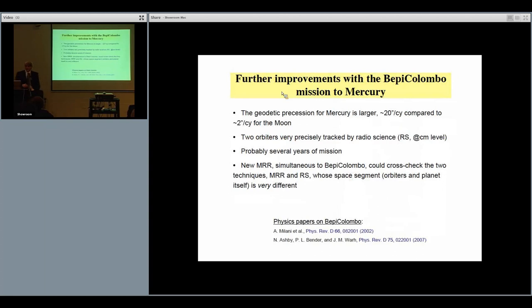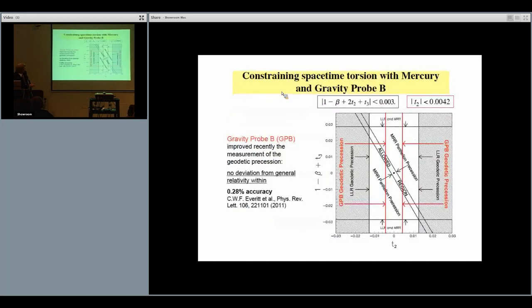Further improvements can be achieved because a new mission has been approved to go to Mercury with two orbiters. The advantage is that the geodetic precession of Mercury compared to the Moon is larger by a factor of 10. The mission has two orbiters around Mercury which will be tracked precisely with radio science experiments. Probably the mission will take several years, hopefully. In this way we are going to have a further measurement of the perihelion precession, which is the one basically constraining the width of this allowed region. If we can improve this by a factor of 10, we will also shrink the region both for t2 and t3 to probably 10 to minus 4.